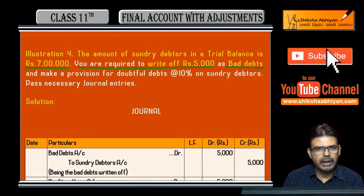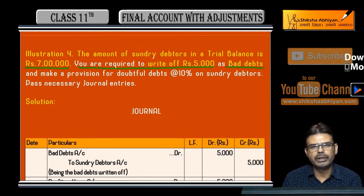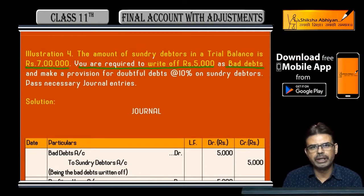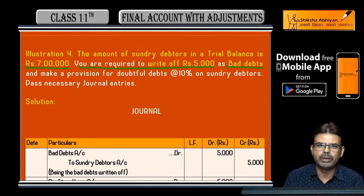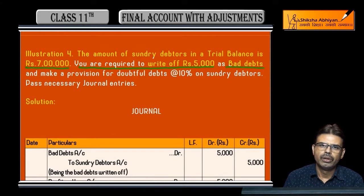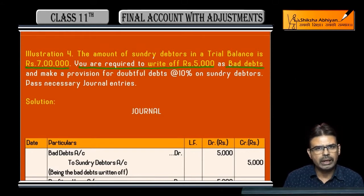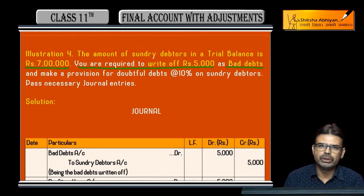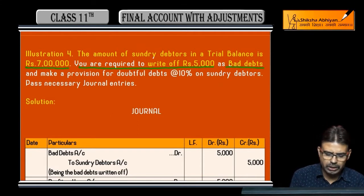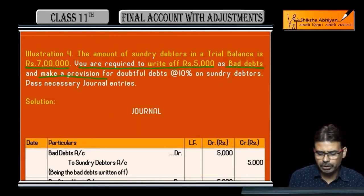Bad debts given in the trial balance, add further bad debts given in the adjustment — that means we take this as new provisions. The new provisions we have to calculate, and old provisions we have to take as given. The old provisions are taken as given, but the new provisions have to be calculated.